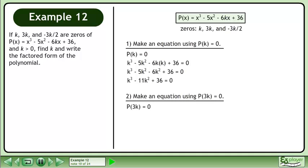Now we'll move on to the second step in our strategy. We know 3k is a zero of the polynomial, so P(3k) = 0. Replace x with 3k.